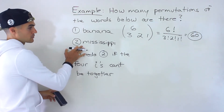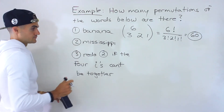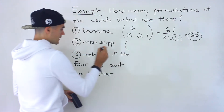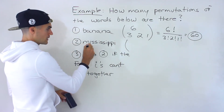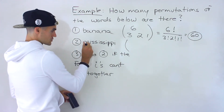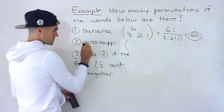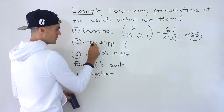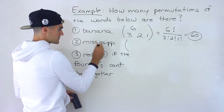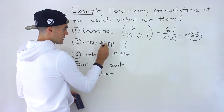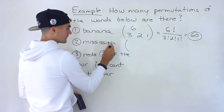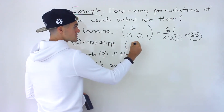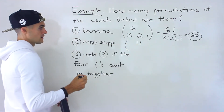Now number two — same thing. We've got to figure out how many letters we're dealing with first. So we count: one, two, three, four, five, six, seven, eight, nine, ten, eleven. So this would be 11 on top.